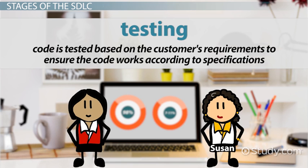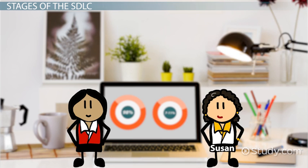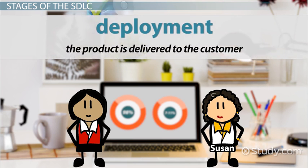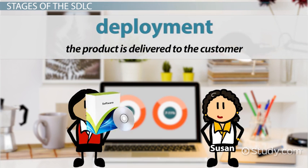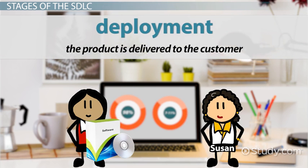The code is tested based on the customer's requirements to ensure the code works according to specifications. After the code is tested, the fifth stage, Deployment, occurs. This is when the product is delivered to the customer.